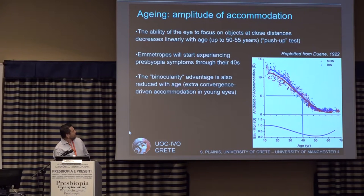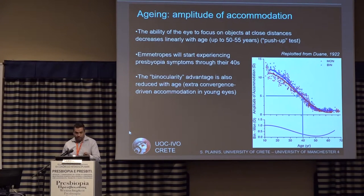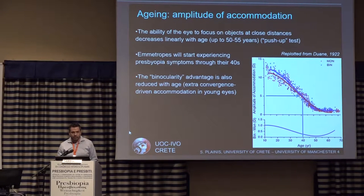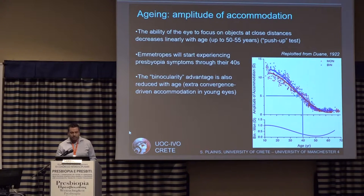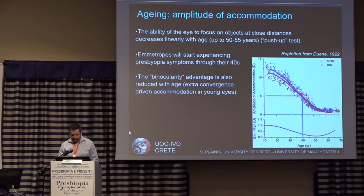This may be because when we are young we converge our eyes and can accommodate very near. So there is some extra convergence-driven accommodation that helps us see better. We'll have to consider this because I think it's important for presbyopia corrections using different types of methods.